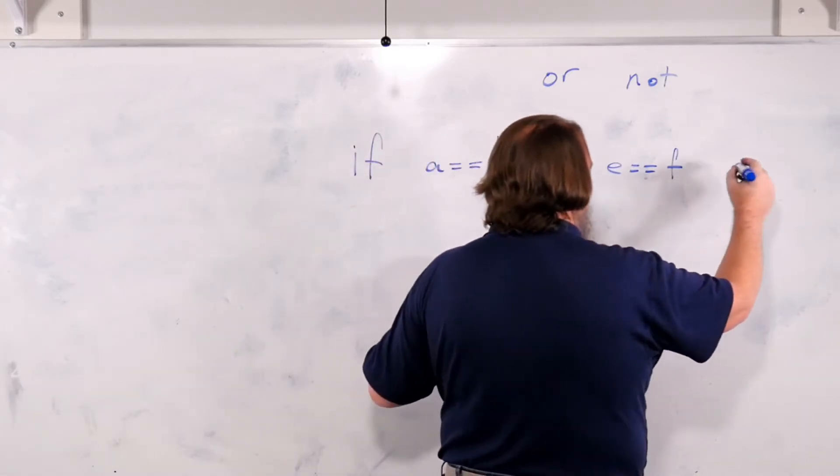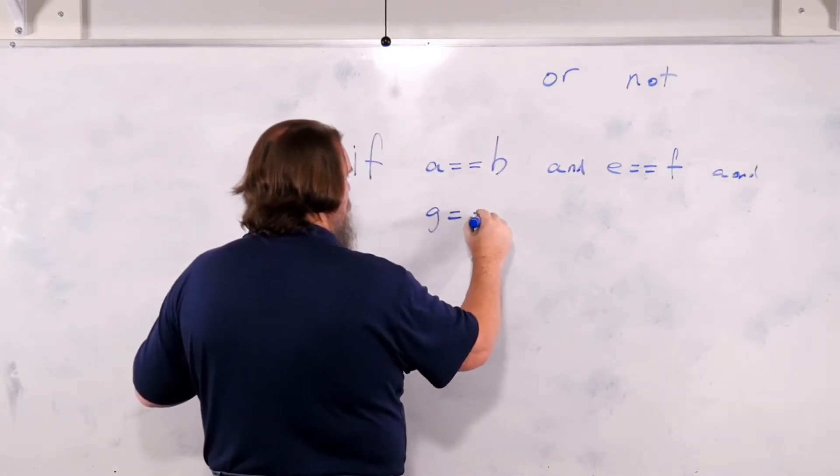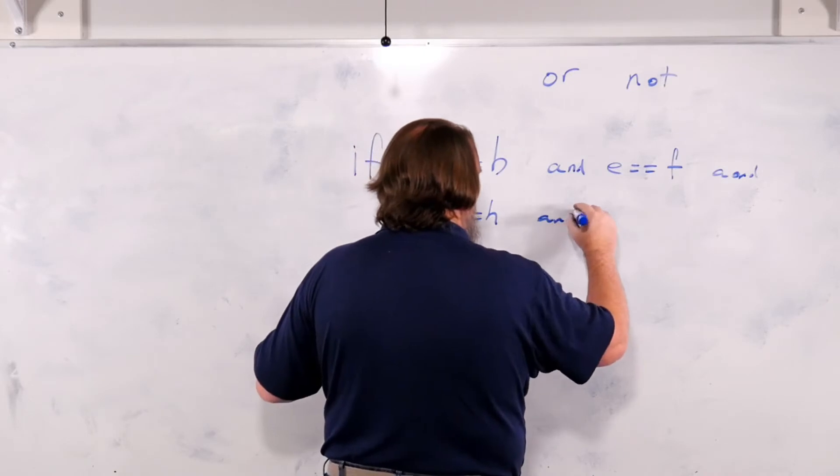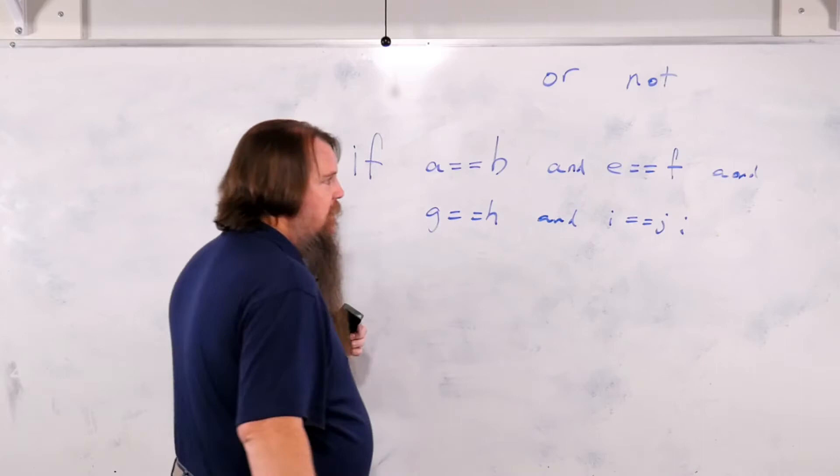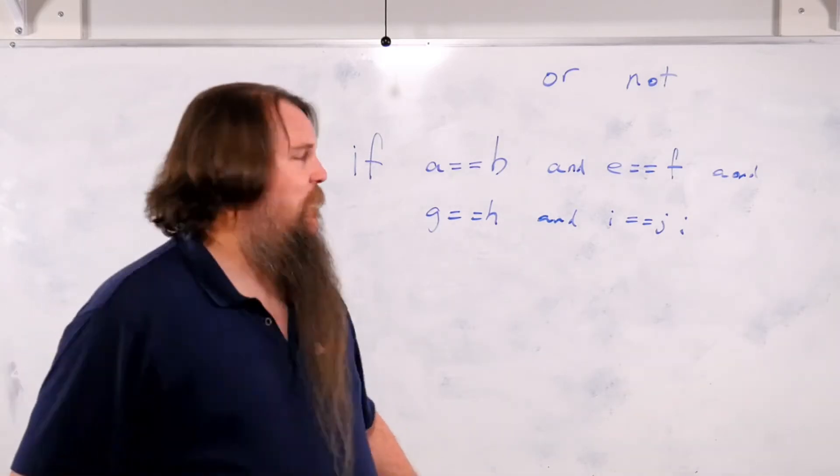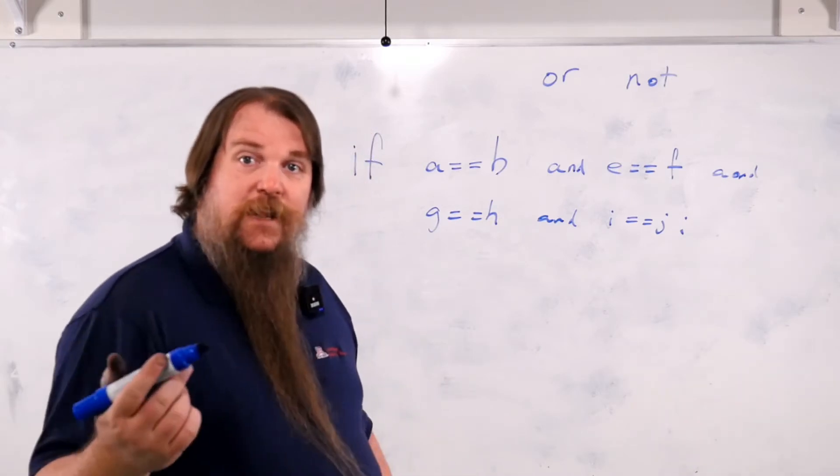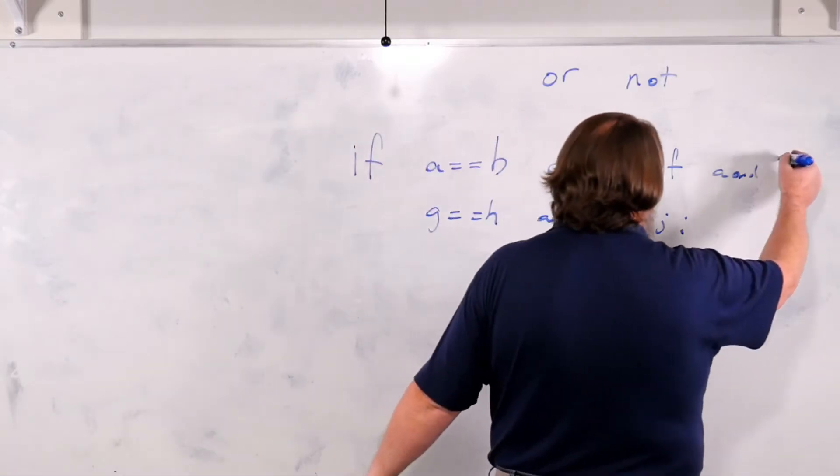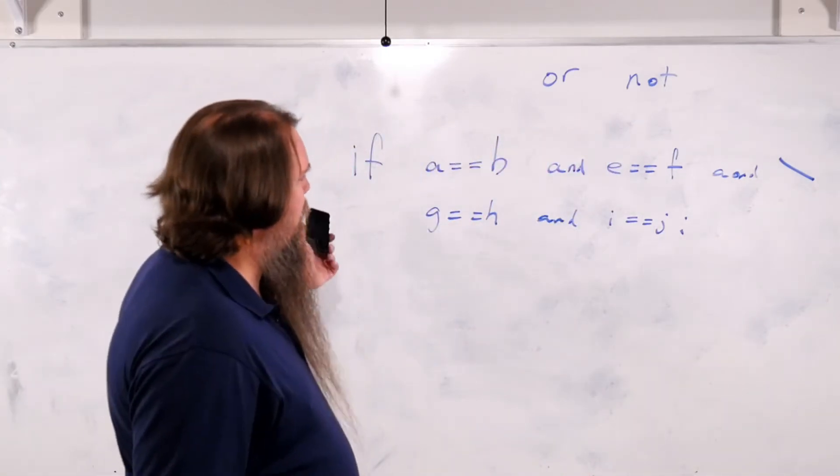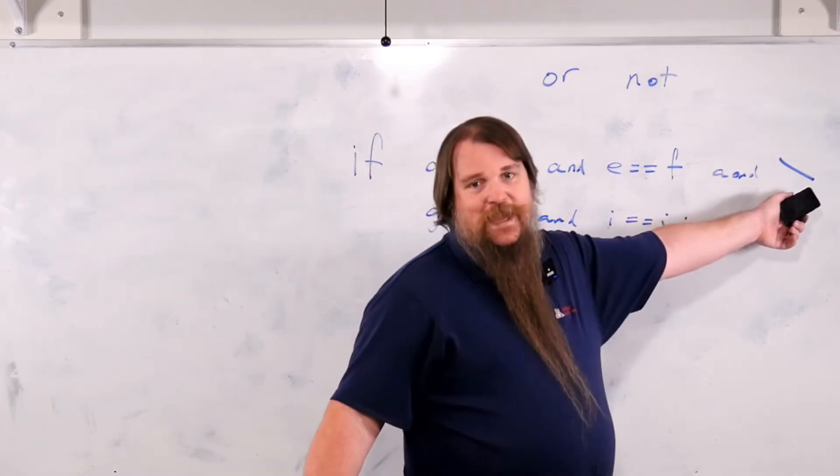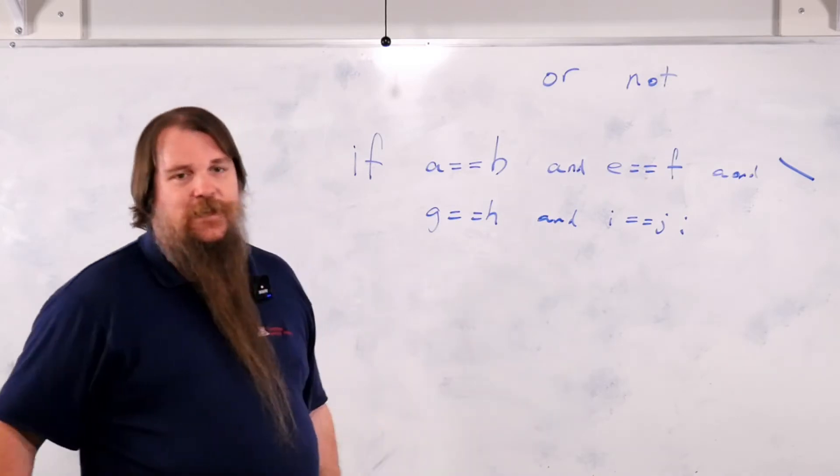if A equals B and E equals F and G equals H and I equals J, that's not going to work in Python because it's looking at indentation. Python does allow you to break something into two lines with a trailing backslash. So if the very last character of your line is a backslash, then Python pretends that there wasn't a line break and just keeps reading the next line from there.